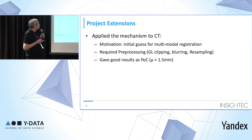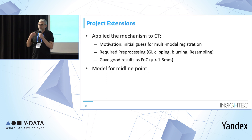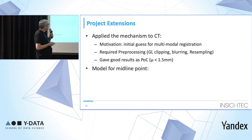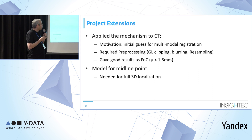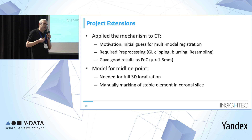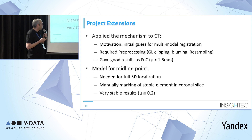The average error for the CT extension was below one and a half millimeters. The other extension was to find a midline point — a point on the center plane of the brain between its two hemispheres — needed for full 3D localization. With only two landmarks, you might rotate around the line between them, but an additional point gives full 3D localization. I took the coronal slice between the AC and PC and manually assigned a stable symmetry element between the brain's two sides, then trained the network.